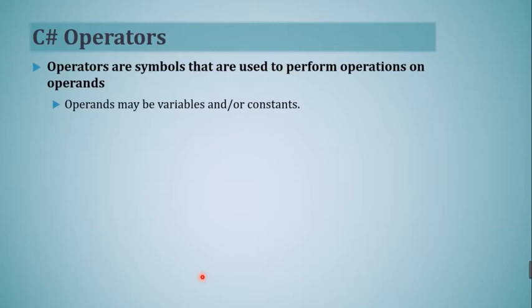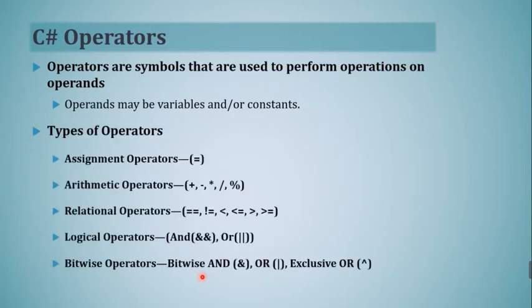The multiplication sign (asterisk) is the operator, and the values being multiplied are the operands. Operands may be variables or constants. With the help of operators you manipulate data and various variables used in your program. Each programming language provides a various set of operators. Similarly, C# has a rich set of built-in operators and provides the following types of operators.